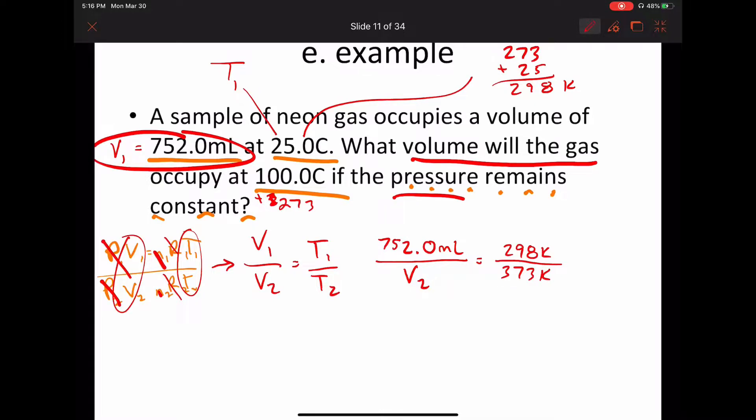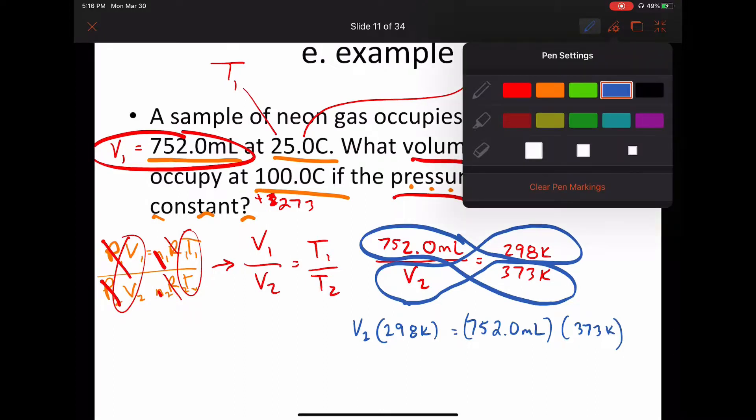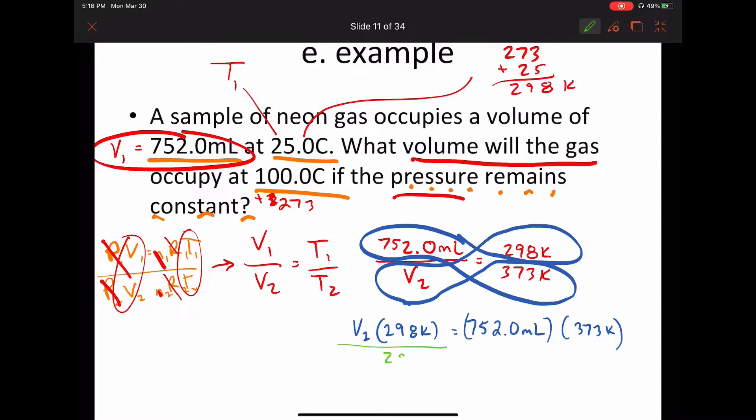Now to solve this problem, I would cross multiply. So that's going to give us V2 times 298 Kelvin equals 752.0 milliliters times 373 Kelvin. And then we need to divide by 298.